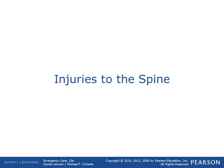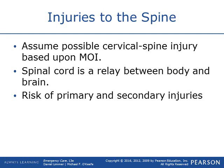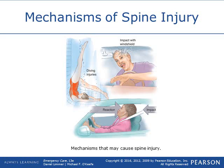Now on to injuries to the spine. Always assume cervical spine injury based upon the mechanism of injury (MOI). Mechanisms of spine injury include diving injuries — bashing your head on the bottom of the pool. People die like that every year. Also impacting a windshield in a motor vehicle accident, or rear-end collisions causing whiplash with coup and contrecoup injuries.